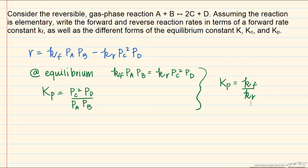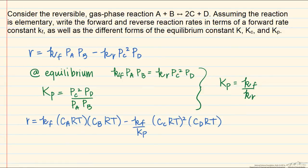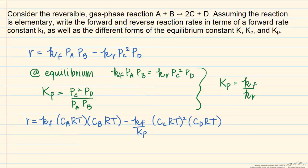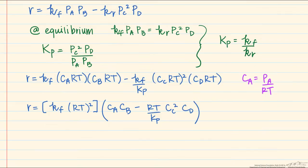We could have written the reaction rate in terms of concentrations instead of partial pressures. Using the relationship that the partial pressure of A equals the concentration of A times RT, we substitute into each partial pressure term. Collecting the RT factors yields new units for the rate constant — now per concentration rather than per pressure — and we define this bracketed term as a new concentration-based rate constant.